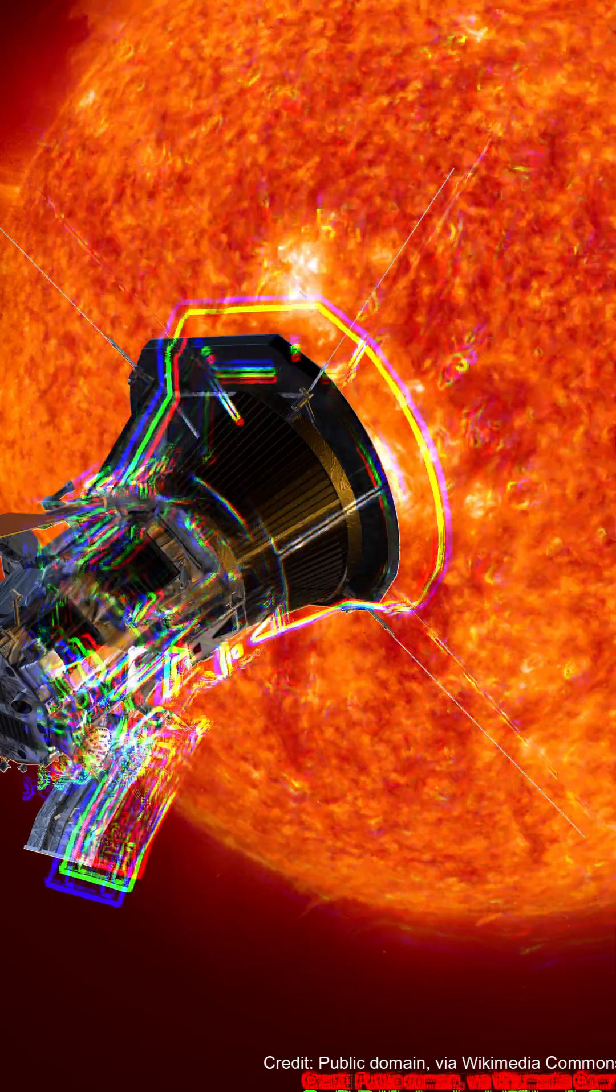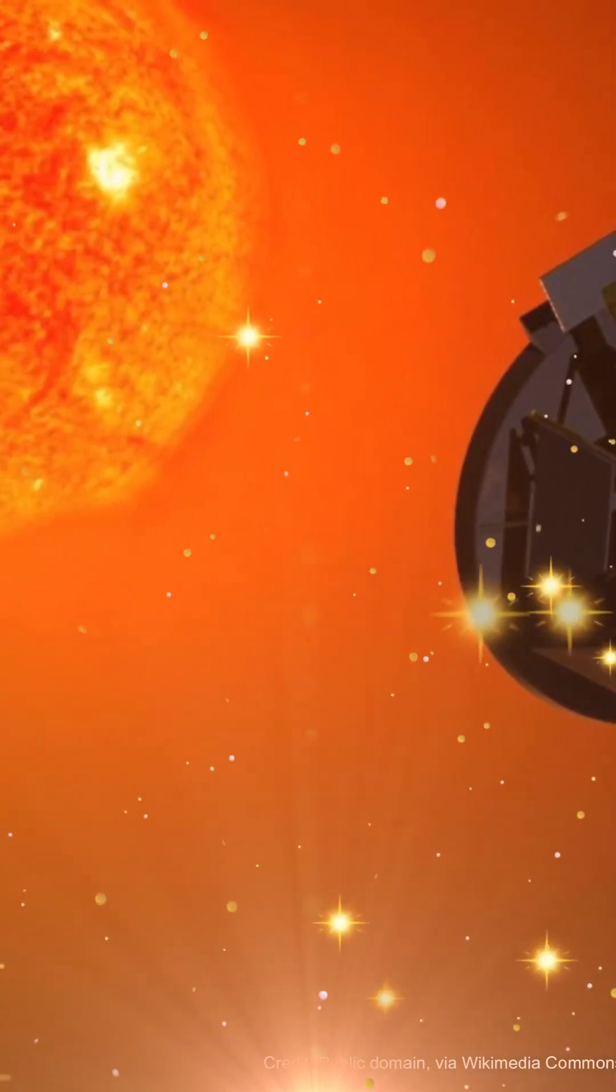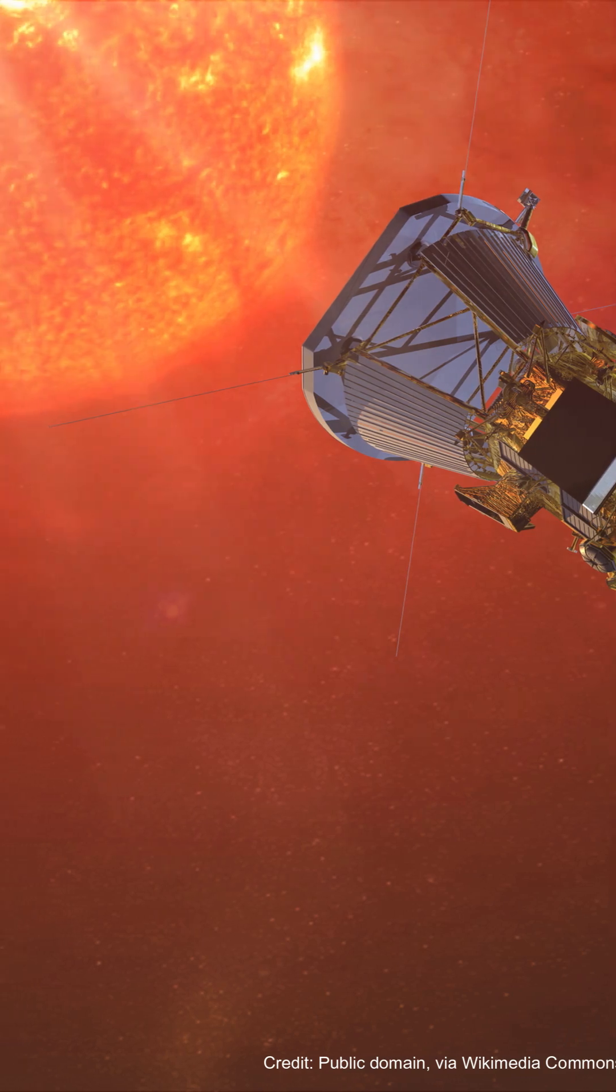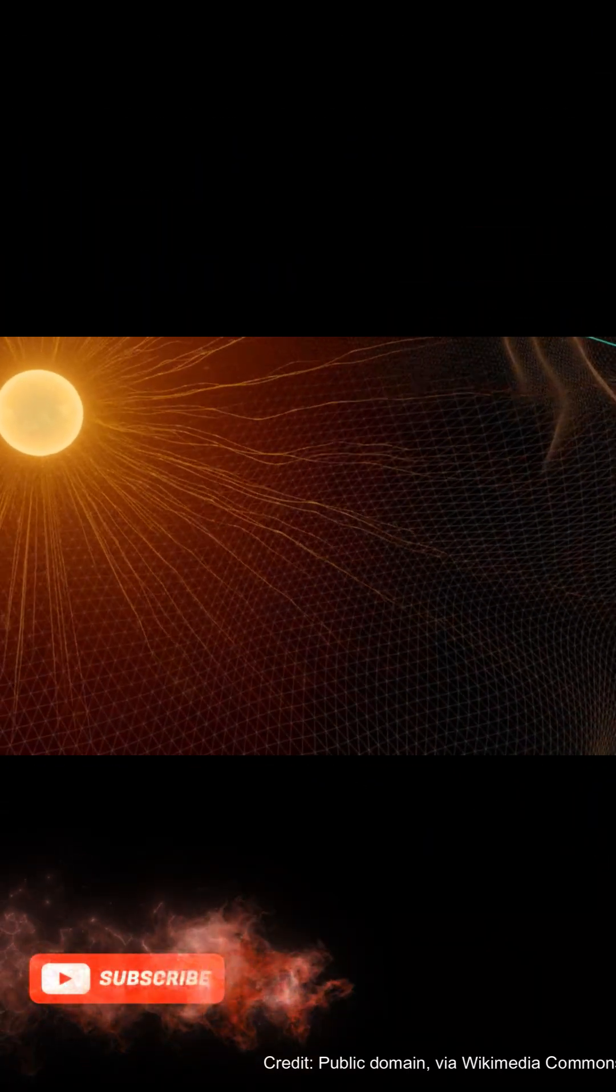But speed isn't the only thing that makes Parker Solar Probe so special. It's getting closer to the sun than any spacecraft before, diving into the sun's corona, its outer atmosphere, at a distance of just 4 million miles. That's seven times closer than Mercury, the closest planet to the sun.